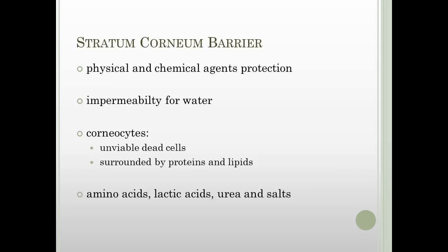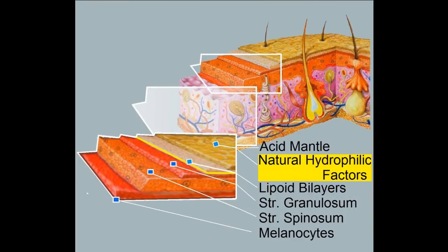Corneocytes are no longer viable, flat hexagonal shaped cells filled with the water retaining keratin protein surrounded by a protein envelope and lipids. The free amino acids along with other physiological chemicals such as lactic acid, urea, and salts are present in the stratum corneum.